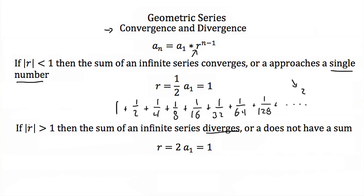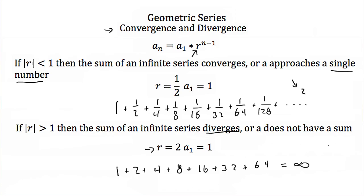Now let's look at what happens when r is greater than 1 — this is when our infinite series diverges. With r equals 2 and first term 1, my terms are 1, 2, 4, 8, 16, 32, 64 — and I'm adding all these together. Each time I'm adding a larger number, so the sum just gets bigger and bigger, going to infinity. That's why if the absolute value of r is greater than 1, there is no answer to your infinite geometric series.